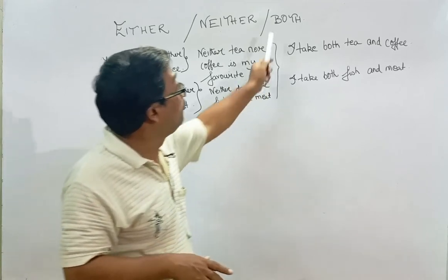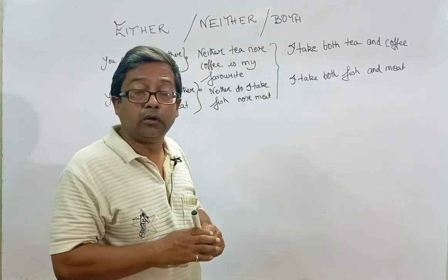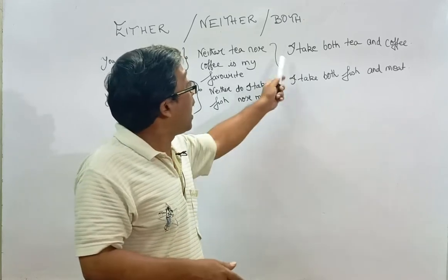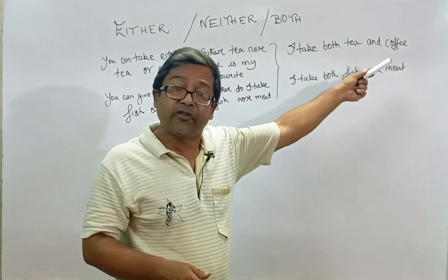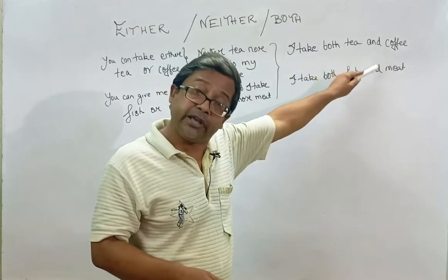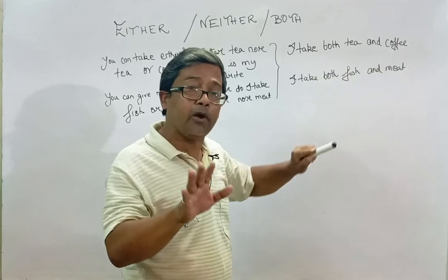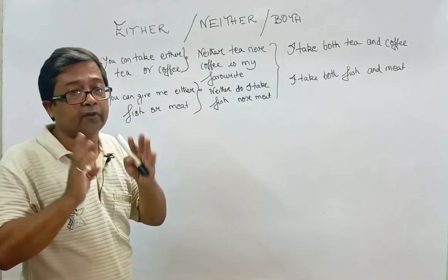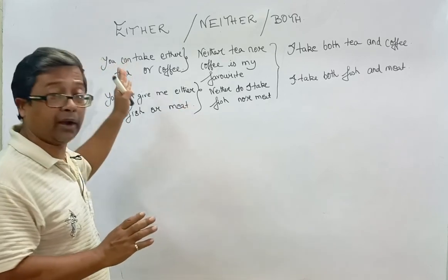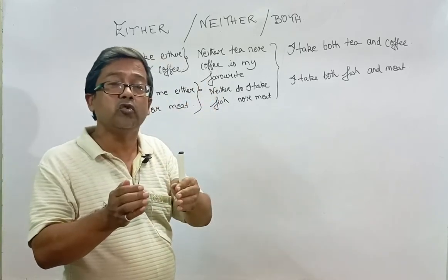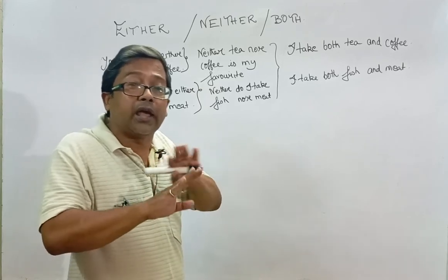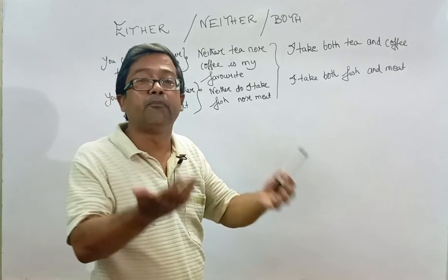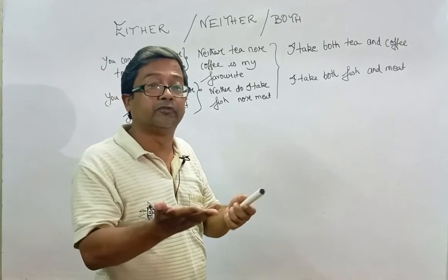Both — two things, and you like both of them and you can take both of them. For example: I take both tea and coffee. So to summarize: either — two things, you have a choice and can take one; neither — two things in front of you, you don't like any of them; both — two things in front of you, you like both of them.